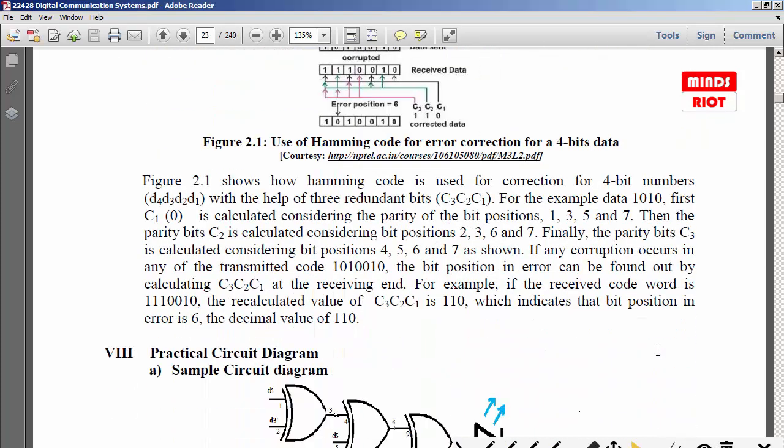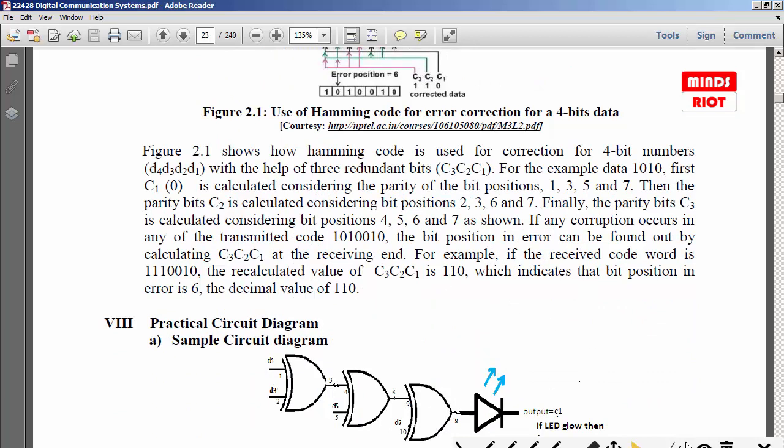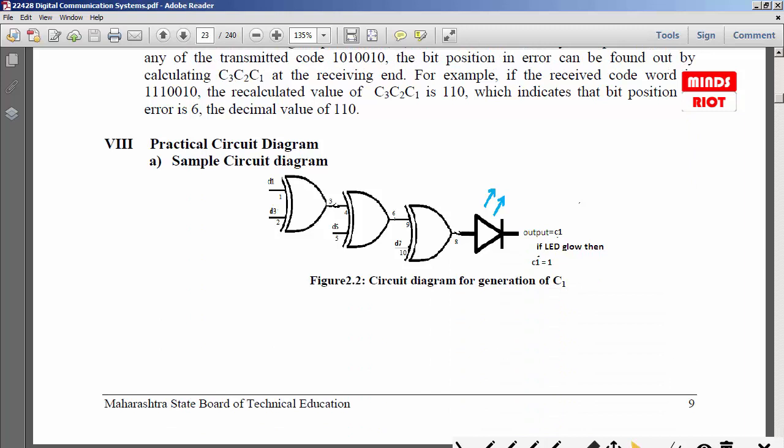For this, we are going to find C3, C2, and C1 with the combination. If we get C3, C2, C1 equal to zero, we will say there is no error in the received bit. If we get any non-zero element, for example 110, this will indicate there is error in the bit position of 6, which is the decimal value of 110. This is the circuit given in your manual. We are going to implement this circuit with multi-sim software.